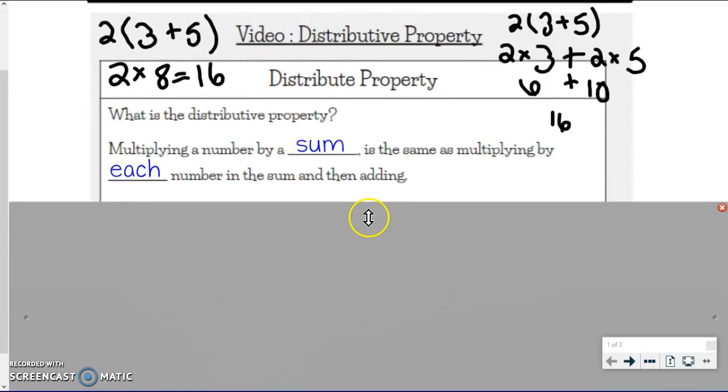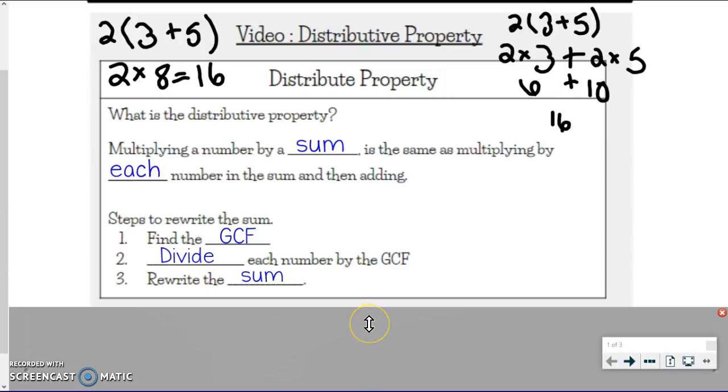So how does this connect to GCF? We can rewrite an expression by using the GCF. The steps in order to rewrite a sum using the distributive property and the GCF is to first find the GCF between the two numbers. Once you find the GCF, you need to divide each number by the GCF. Then we rewrite the sum. Let's try this with some examples.